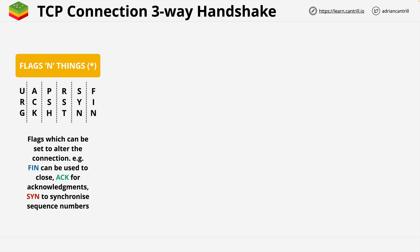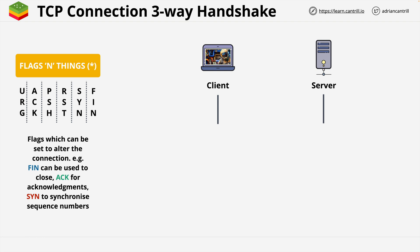FIN will finish a connection, ACK is an acknowledgement, and SYN is used at the start of connections to synchronize sequence numbers. With TCP, everything is based on connections — you can't send data without first creating a connection. Both sides need to agree on some starting parameters, and this is best illustrated visually. So the start of this process is that we have a client and a server, and before any data can be transferred using TCP, a connection needs to be established using a three-way handshake.